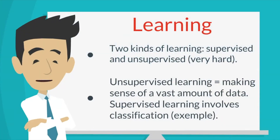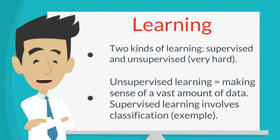Learning is a big one, and machine learning is a big part of AI. You have two kinds of learning: learning without supervision, which is very hard, and learning with supervision. Learning without supervision requires an ability to make sense of a vast amount of data, while learning with supervision — with human help — involves more classification, for example.